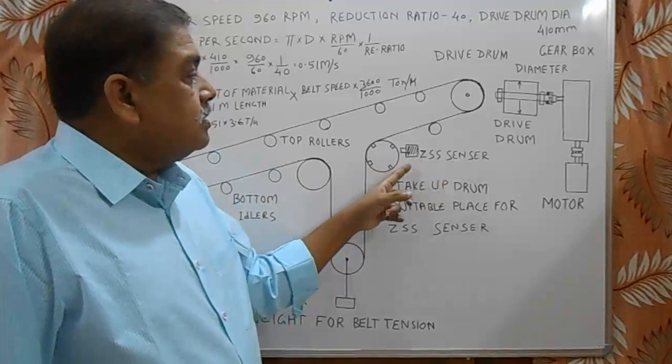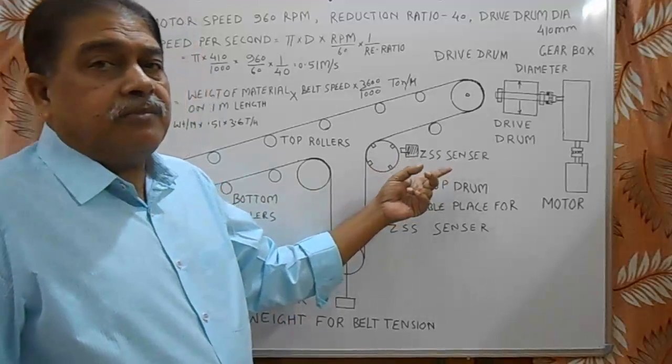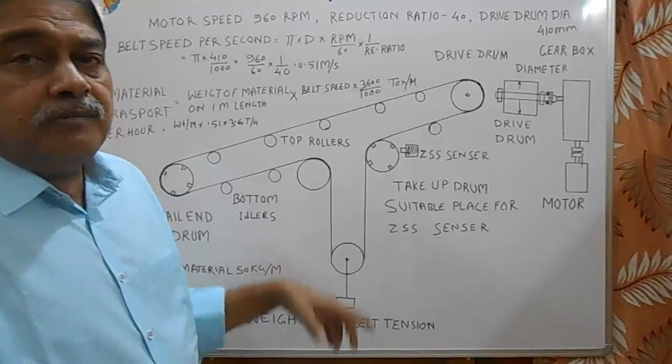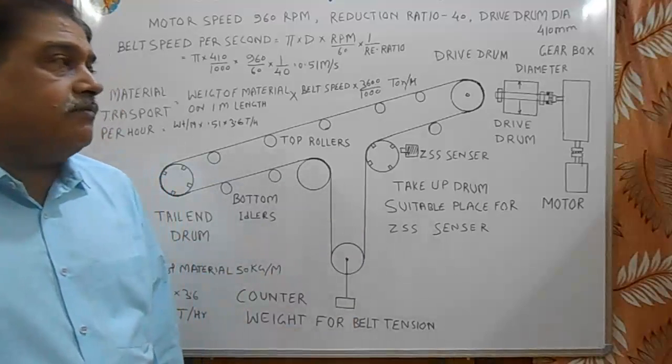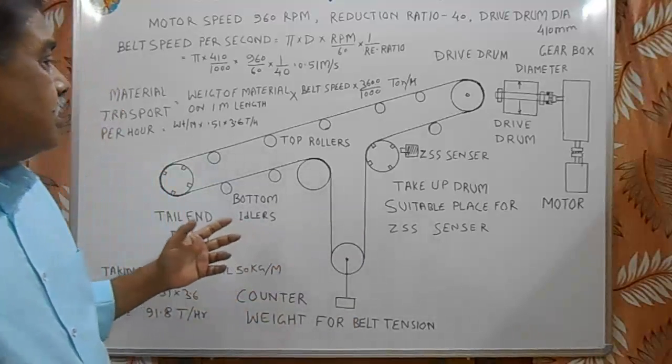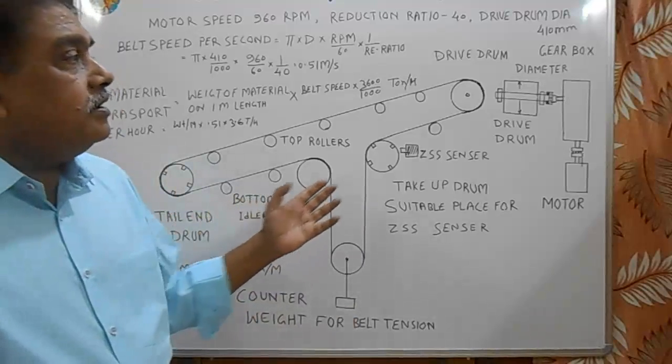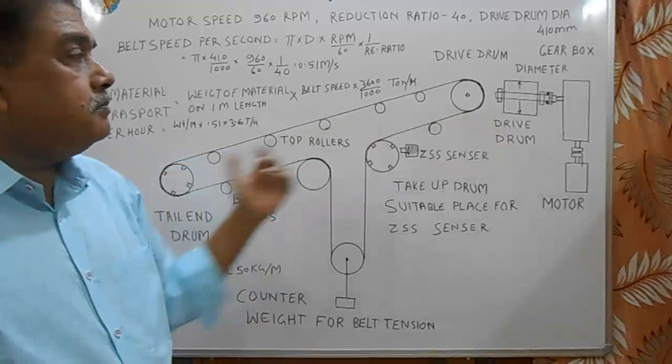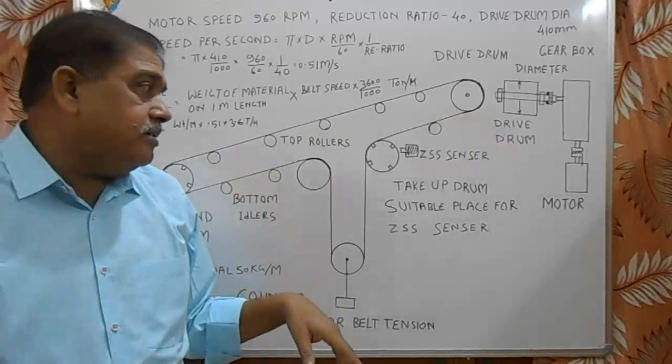From here the wires go to ZSS controller and from there the wire goes to the main interlocking circuit of belt conveyor control circuit. These belt conveyors are interlocked with the next belt conveyor and previous belt conveyor. They provide electrical interlockings.